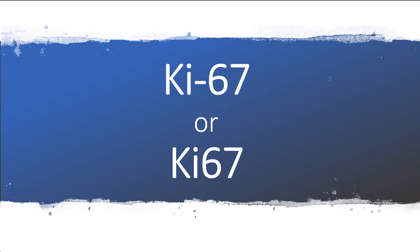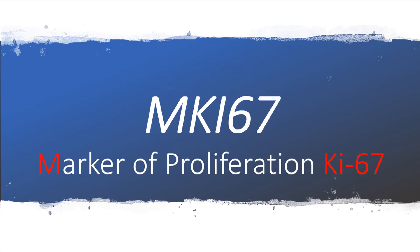KI-67, written with or without a hyphen, is a biomarker of cellular proliferation. It is a nuclear protein encoded by the MKI-67 gene, and MKI-67 stands for marker of proliferation KI-67.